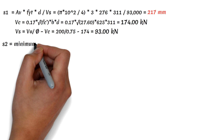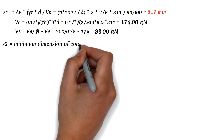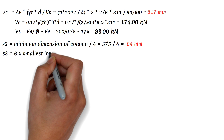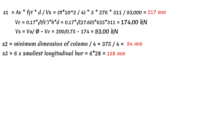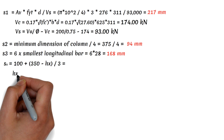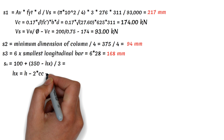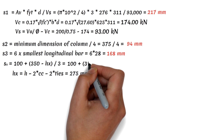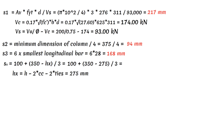For the other spacings, we consider the provisions for columns of special moment-resisting frames. S2 equals one-fourth of the minimum column dimension, which equals 94 mm. S3 equals six times the diameter of the smallest longitudinal bar, which equals 168 mm. S0 uses the formula 100 plus (350 minus Hx) divided by 3, where Hx equals the height of the column parallel to the shear force minus two times the concrete cover minus two times the diameter of the lateral tie, resulting in 275 mm. So S0 equals 100 plus (350 minus 275) divided by 3, giving 125 mm. Note that S0 shall not exceed 150 mm and need not be taken less than 100 mm. Choosing the smallest of all spacings gives 94 mm, which we round down to 90 mm.